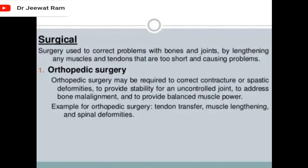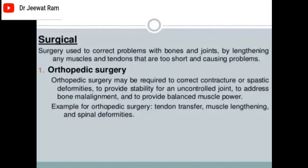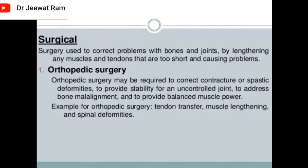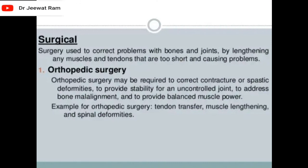Surgical treatment of cerebral palsy: surgery is used to correct problems with bones and joints by lengthening muscles and tendons that are too short and causing problems. Orthopedic surgery may be required to correct contractures or spastic deformities, provide stability for an uncontrolled joint, address bone malalignment, and provide balanced muscle power. Examples include tendon transfer, muscle lengthening, and correction of spinal deformities.